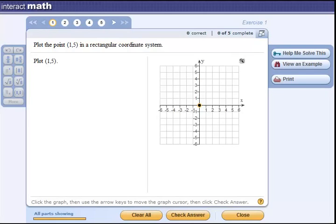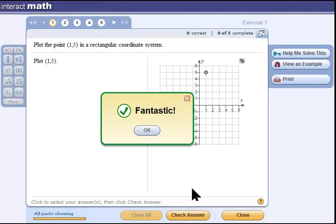Since we're graphing the point (1,5), I'm going to go positive 1 in the x direction, which is to the right, and then positive 5 in the y direction, which is up: 1, 2, 3, 4, 5. Now I'll release the point and I will check my answer, at which point I'm told that I am fantastic.